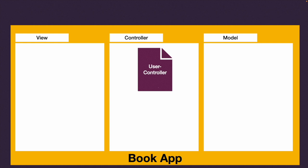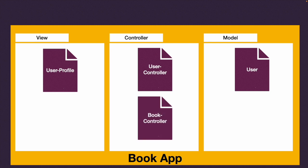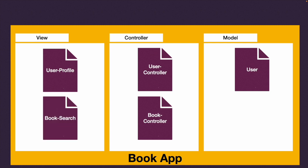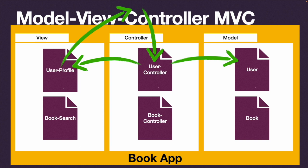We take our business logic folder and call it the 'controller' folder, and our persistence folder becomes the 'model' folder. Inside the controller folder we add a user controller, a user model, and a user profile view. We can add a book controller, a book search view, and a book model. This is what we call Model View Controller, or MVC. A user who calls your MVC application will generally start at a controller, and which controller they reach is controlled by a router.